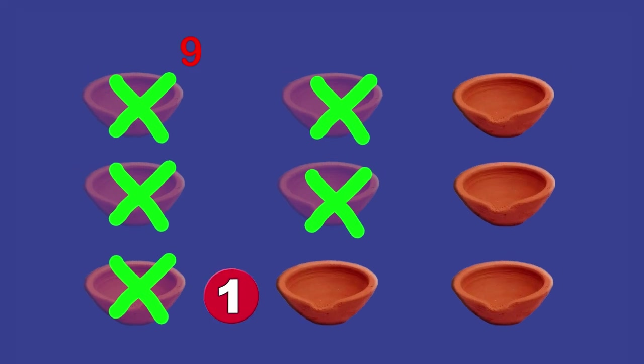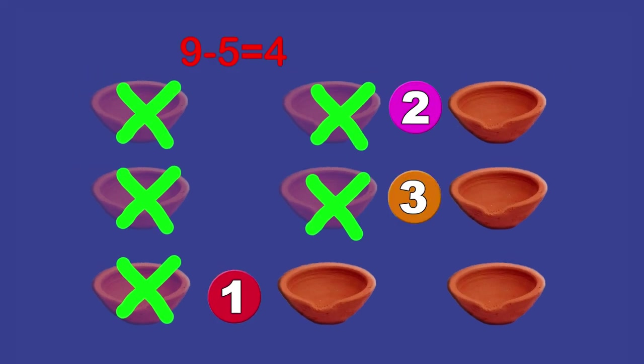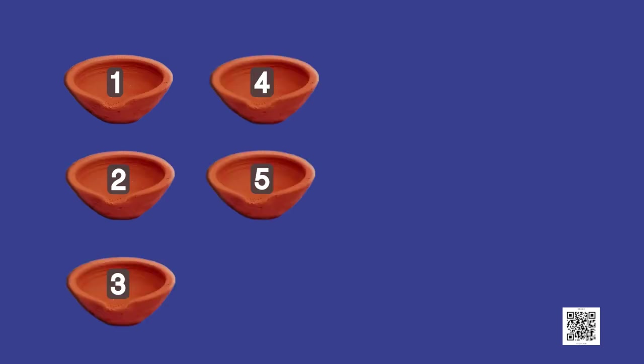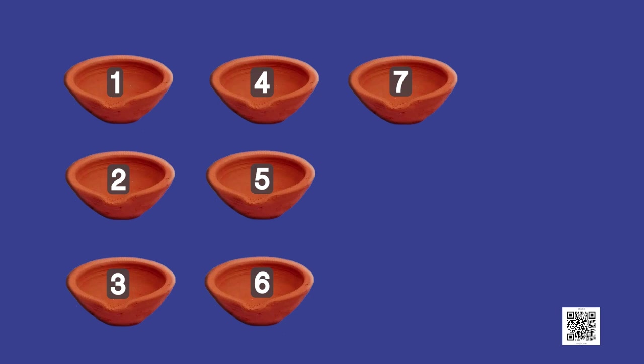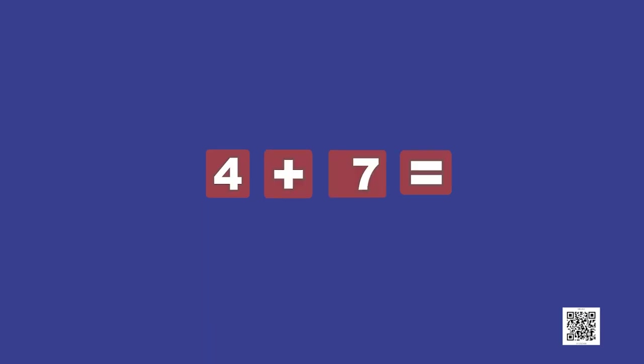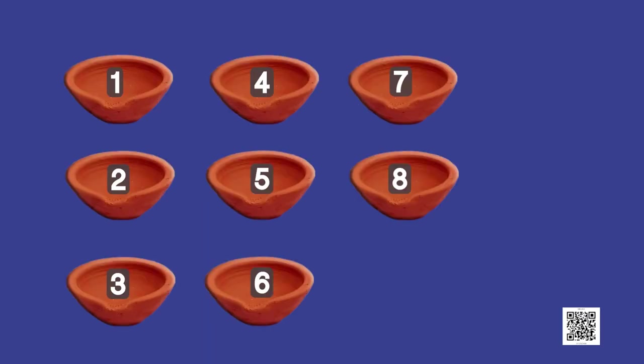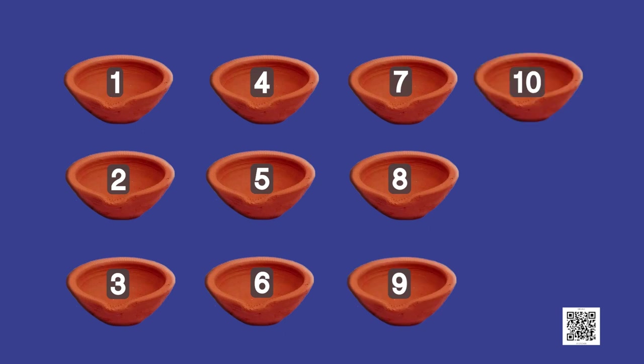Now he is left with 9 minus 5, yes, 4 diyas. Let us see what happens next. Then he made 7 more diyas. How many diyas does he have now? That means we finally need to add 4 to 7. So 4 plus 7 — how much will it be? It will be 11. That means the potter now has 11 diyas.